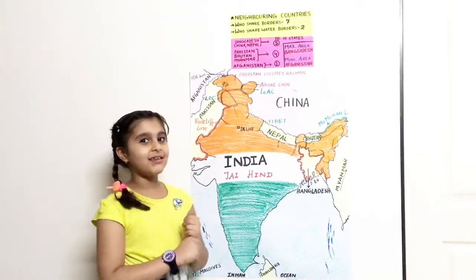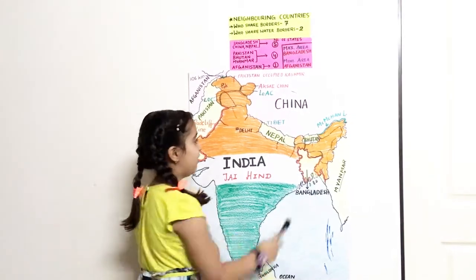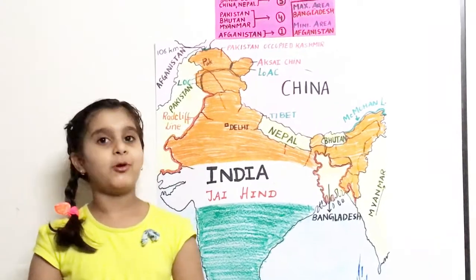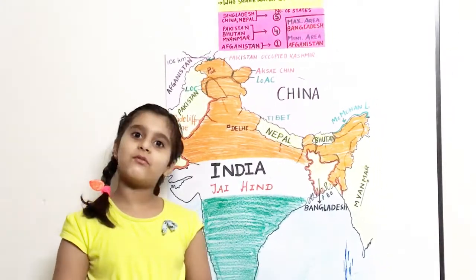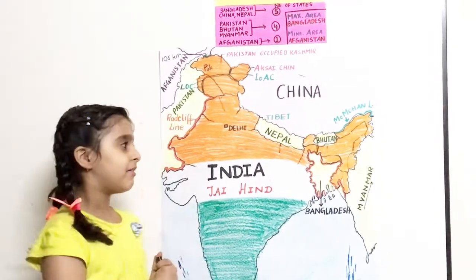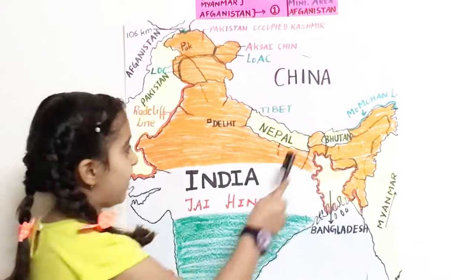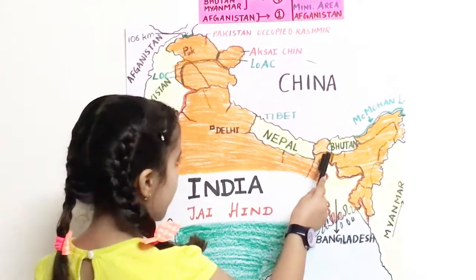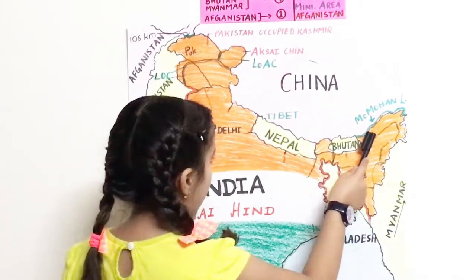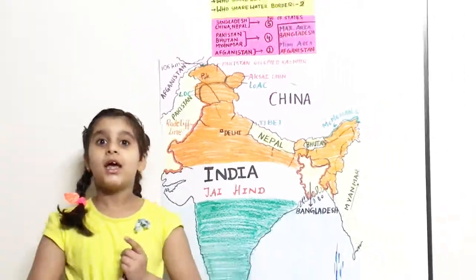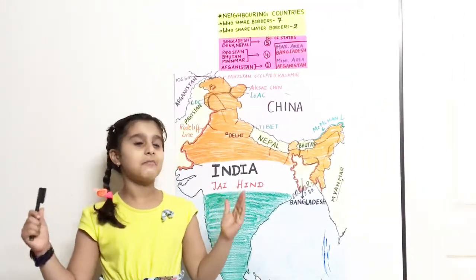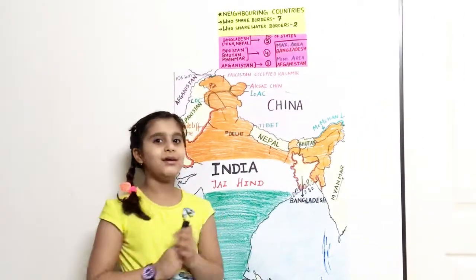Our next neighboring country is Bhutan. The capital of Bhutan is Thimphu. It shares a border with four states which are Sikkim, West Bengal, Assam and Arunachal Pradesh. It shares the largest border with Assam.